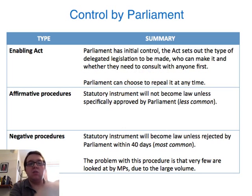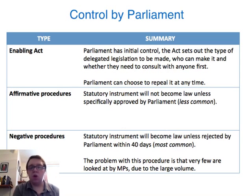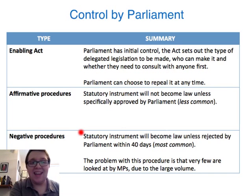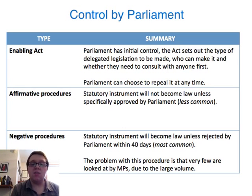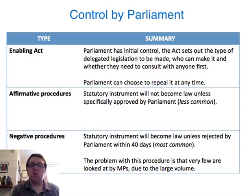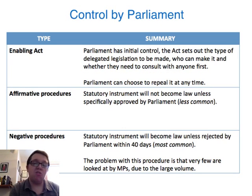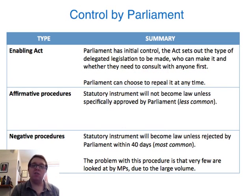The Enabling Act may also have written into it one of two procedures. The first is an affirmative procedure, meaning the statutory instrument will not become law unless specifically approved by parliament first — this one is less common. The more common one is the negative procedure or resolution, meaning the statutory instrument will become law unless it's rejected by parliament within 40 days. This requires an MP to ask for the statutory instrument to be debated in the House of Commons or to object to it if he or she finds something wrong with it. The problem is that with over 3,000 statutory instruments created each year, very few MPs have the time to go into the House of Commons library and read the draft.